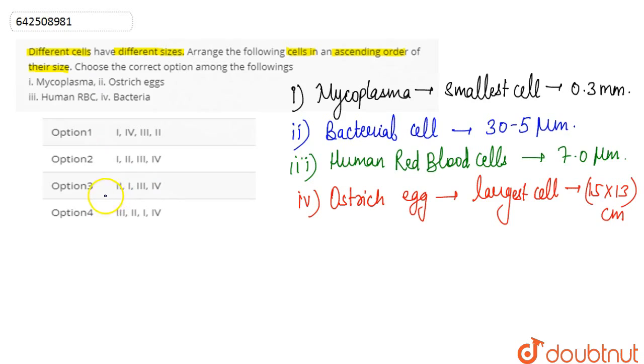So the correct order is basically first the mycoplasma, then on the second number we have the fourth one, then we have the third and then lastly we have the second one.